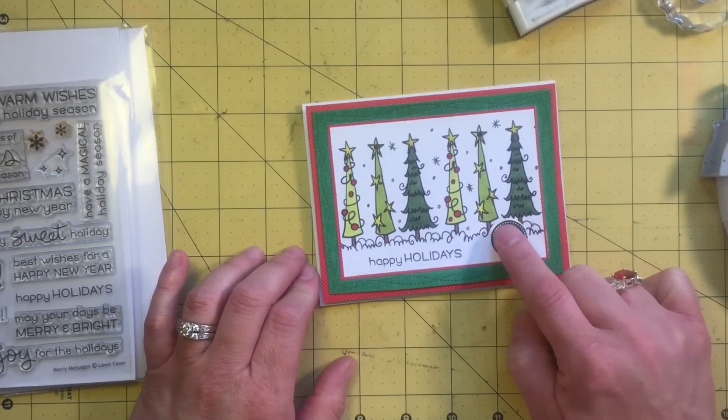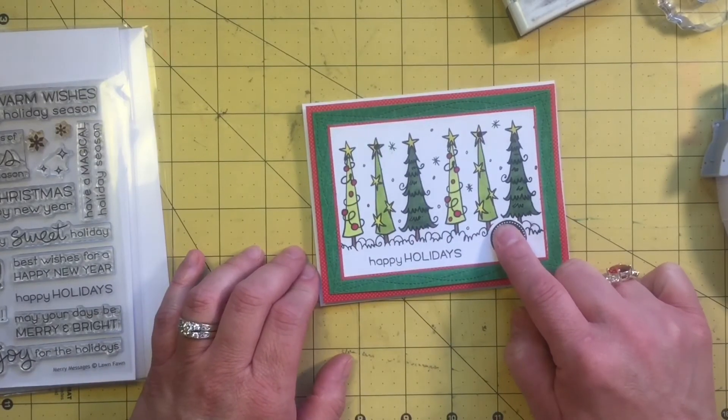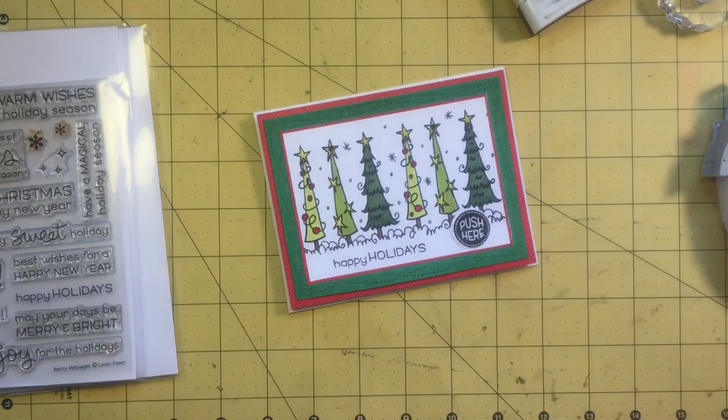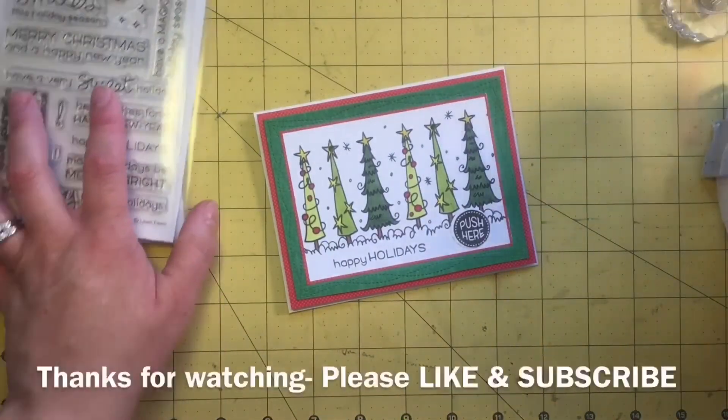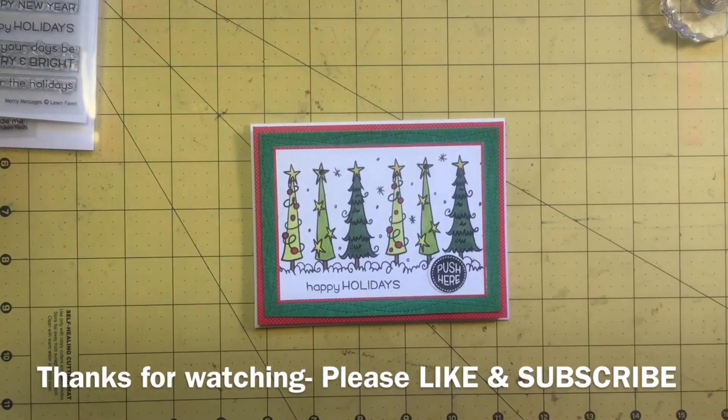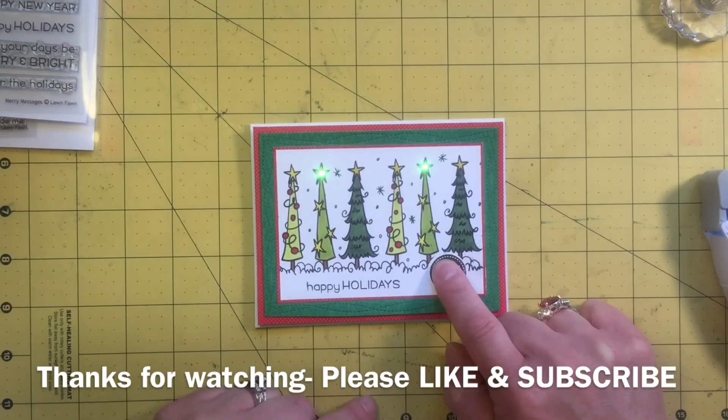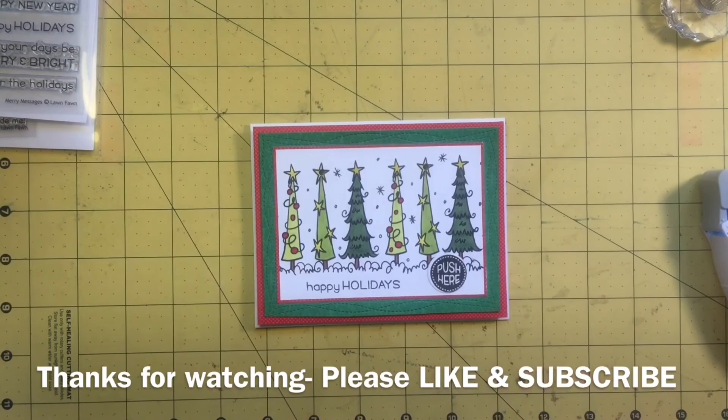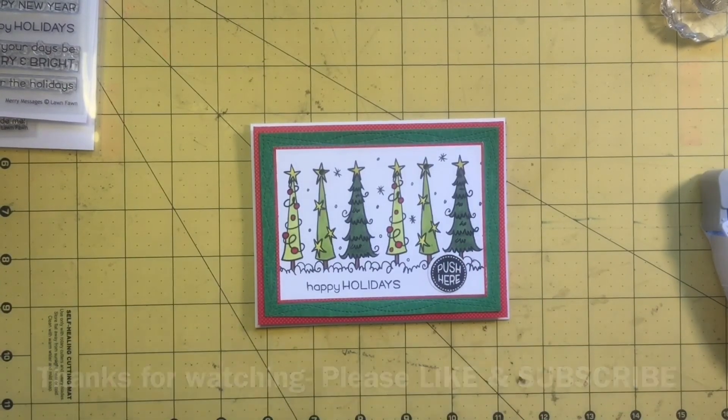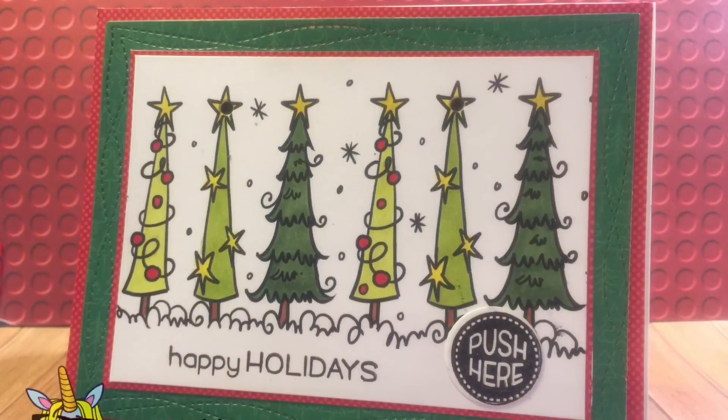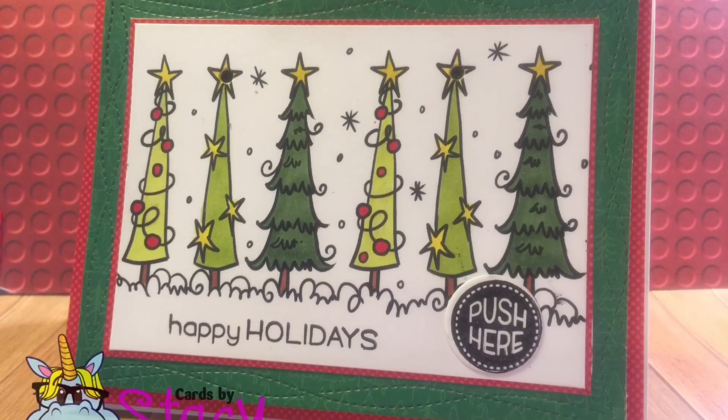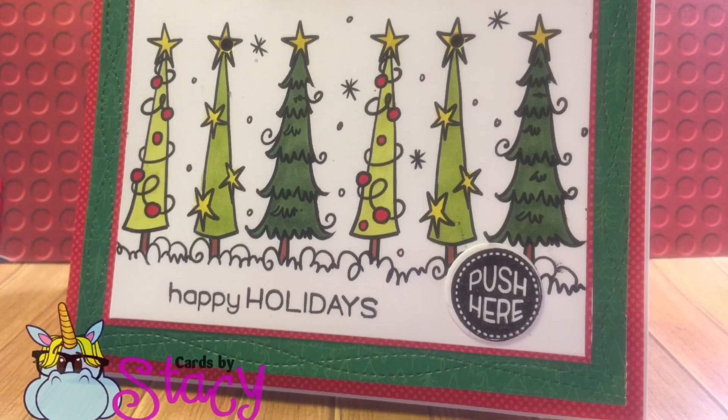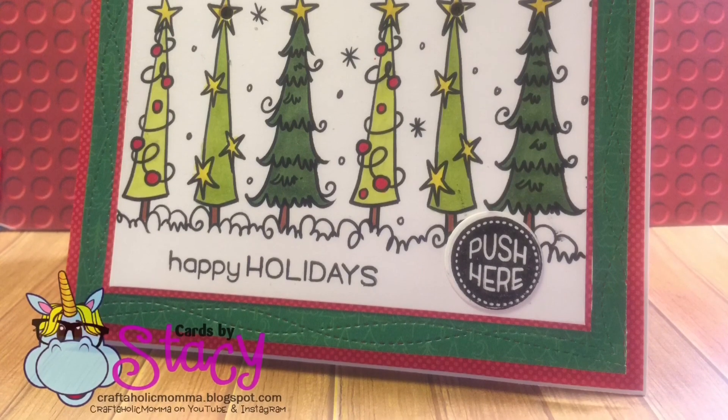And there, voila, it worked! Yay! The camera makes it look like they're green lights, but in real life they're really yellow. So there you go, a Chibitronic card featuring Bugaboo Digi Stamps. Thanks for watching. Please like and subscribe and have a good day. We'll see you next week.